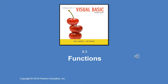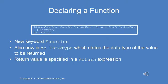We will cover functions. Functions are very similar to procedures except they return a value, which means they are typically on the right-hand side of an assignment statement, and the value they return is assigned to a variable of the same type as the return. When we declare a function, we use the keyword function and it also includes the 'as data type' which states the data type of the value to be returned. That value is returned using a return expression, which is typically the last statement in the body of the function.